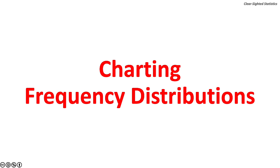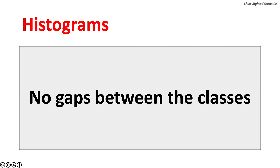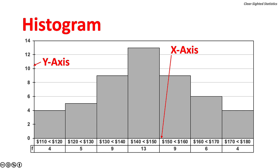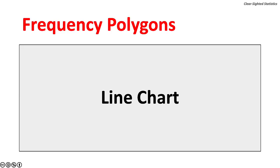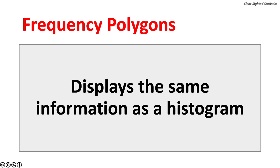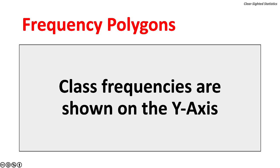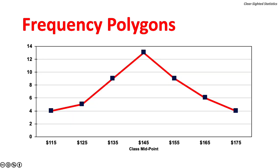Let's turn to how frequency distributions are charted. The most common chart is the histogram, which is a type of column chart. The x-axis shows quantitative categories with no gaps between them; the y-axis shows the class frequencies. Another chart commonly used is the frequency polygon, which is a line chart displaying the same information as a histogram. Class midpoints are typically shown on the x-axis, and class frequencies on the y-axis. Lines connect the class midpoints and frequencies.